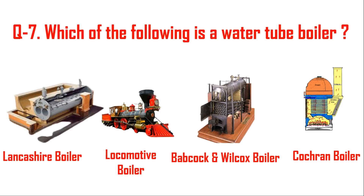Question number seven: which of the following is a water tube boiler? The four options are Lancashire boiler, locomotive boiler, Babcock and Wilcox boiler, and Cochran boiler. Lancashire, locomotive, and Cochran boilers are all fire tube boilers, so Babcock and Wilcox is the correct answer — it is the water tube boiler.